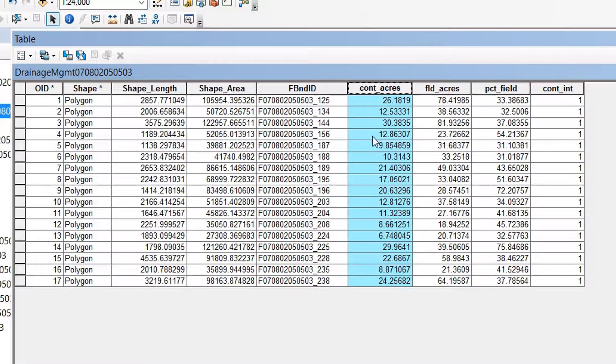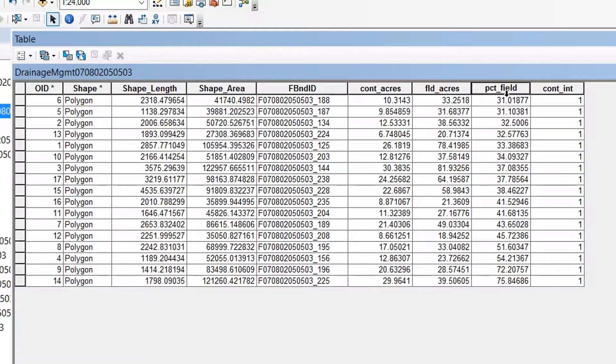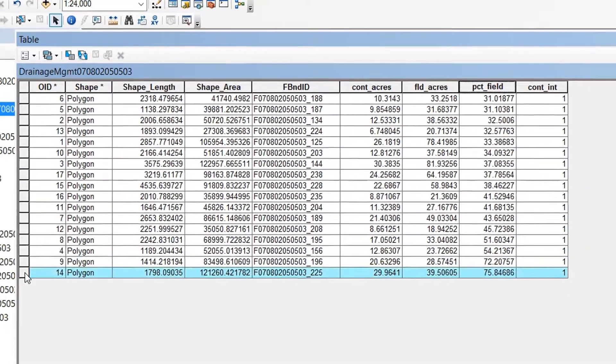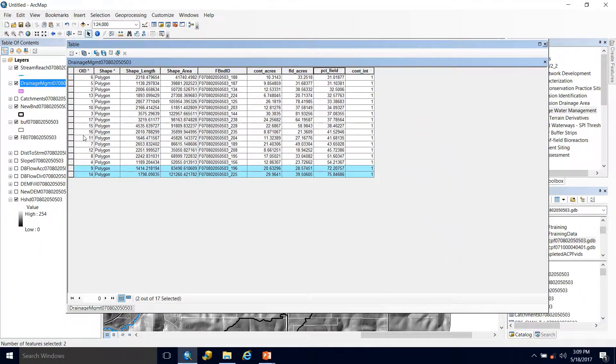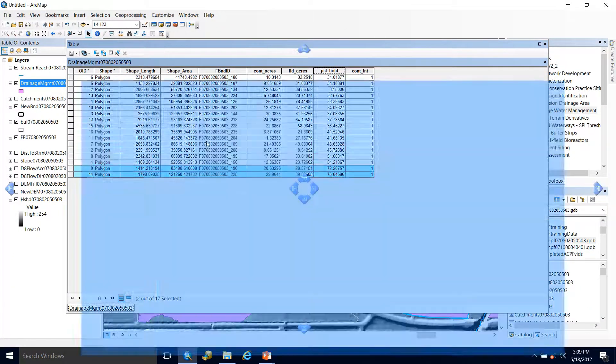Then we also get the contributing acres to that practice. We get the field acreage so we could compare. And then the percent of field, since I specified that I had to make up at least 30%, we won't see a value lower than that. We do see that there are a couple that treat close to 75% of the field, which is exciting.